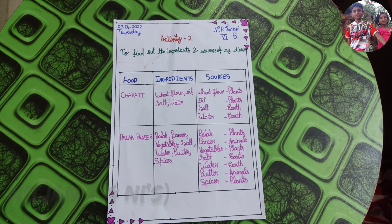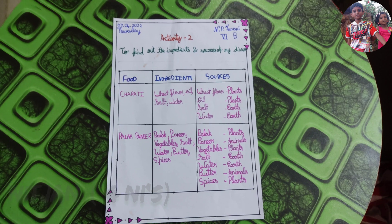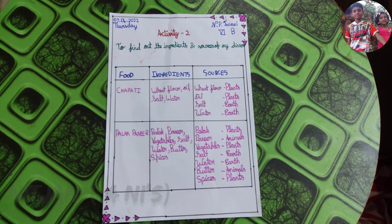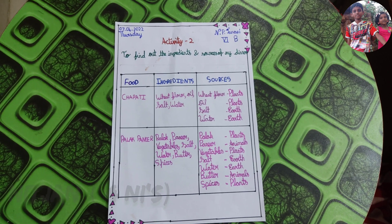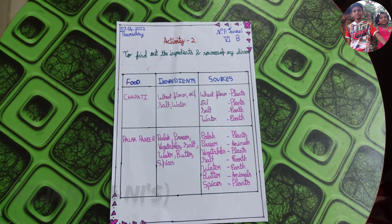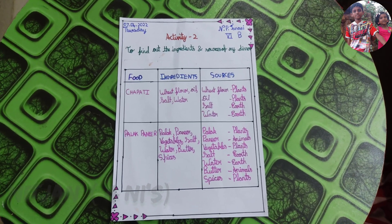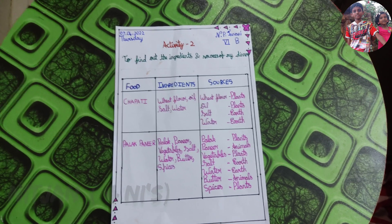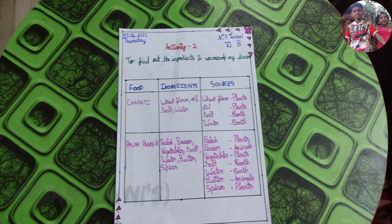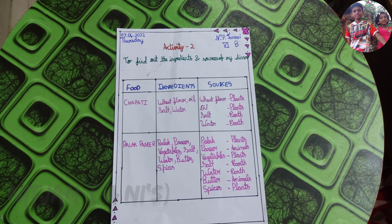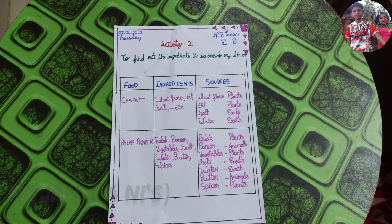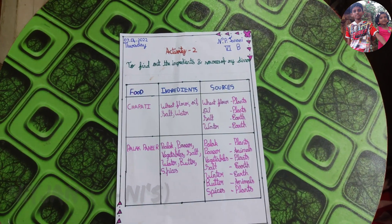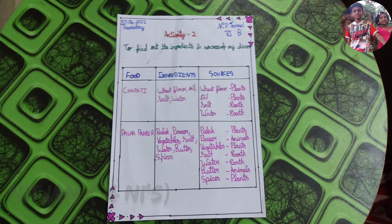Palak paneer: vegetables, salt, water, butter and spices. Palak from plants, paneer from animals, vegetables from plants, salt from earth, water from earth, butter from animals and spices from plants.